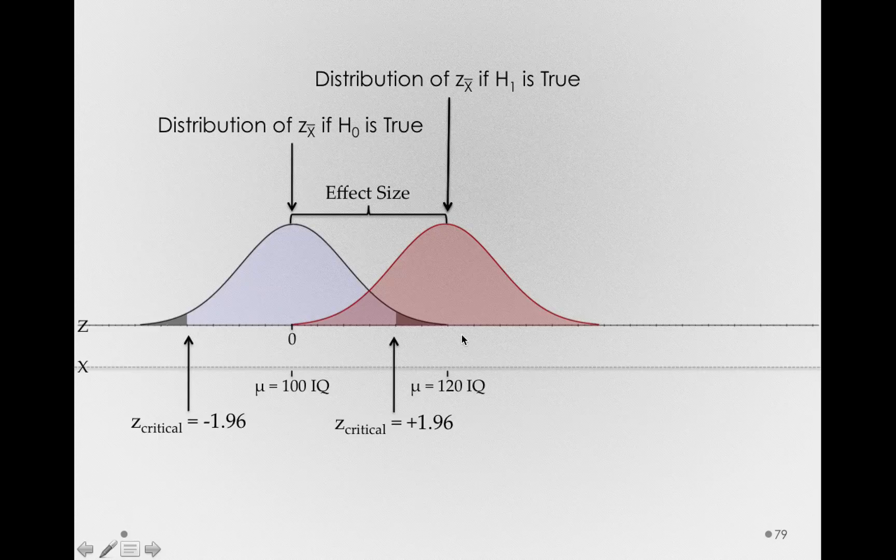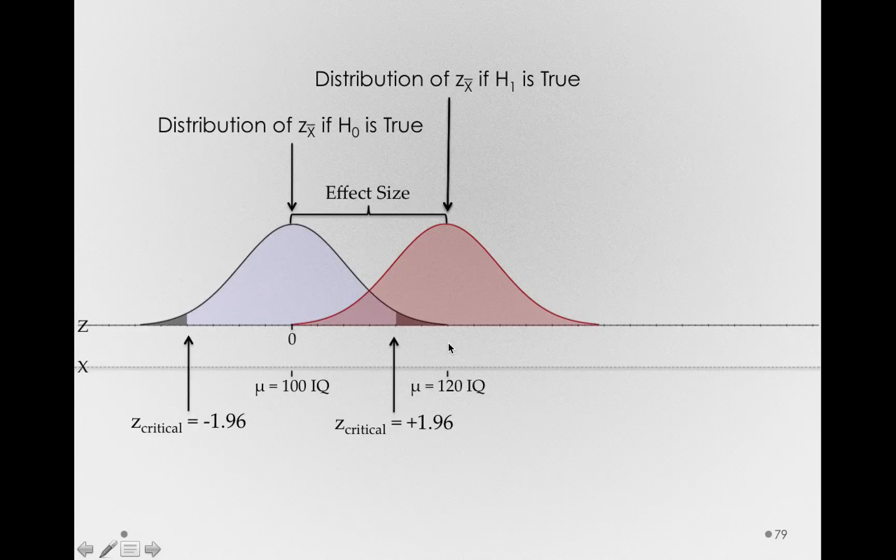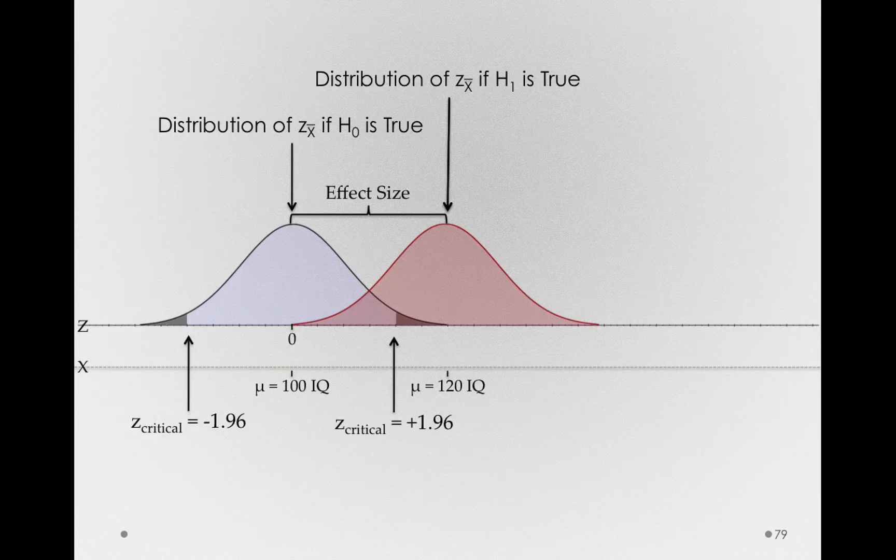We'll also experience sampling error in the other direction. Sometimes from this red distribution we'll get a sample with a mean up at 140. Sampling error is an ever-present property of our universe. Just because there's a true effect doesn't mean we won't get sampling error. We always get sampling error with our sample statistics.